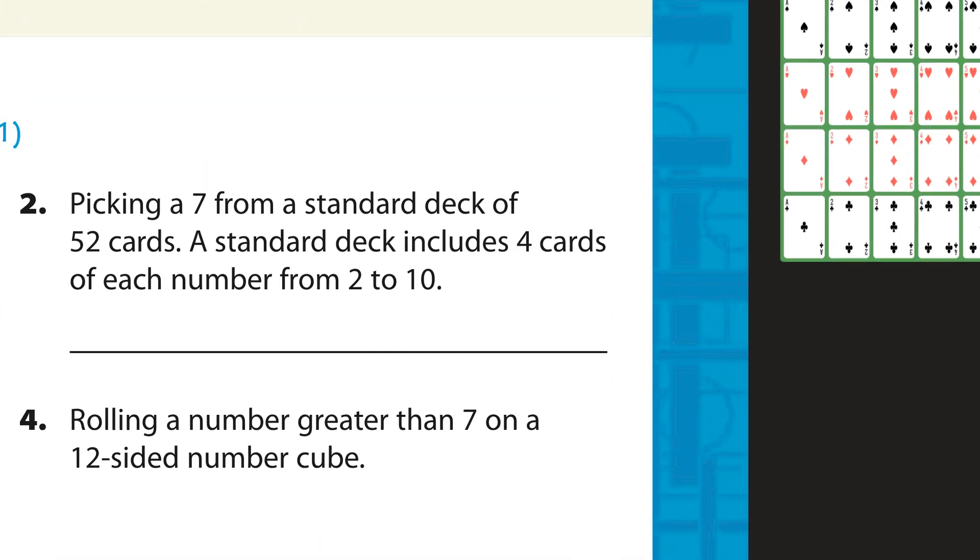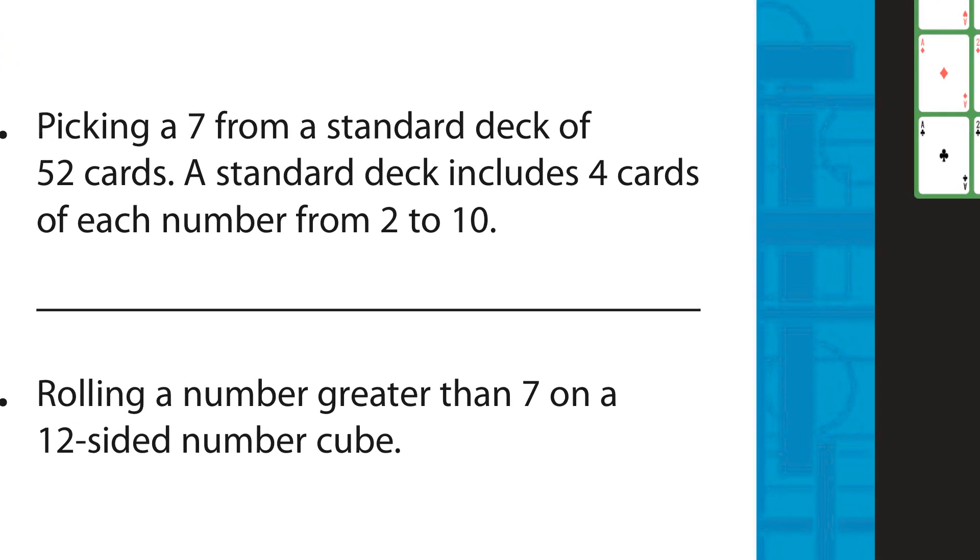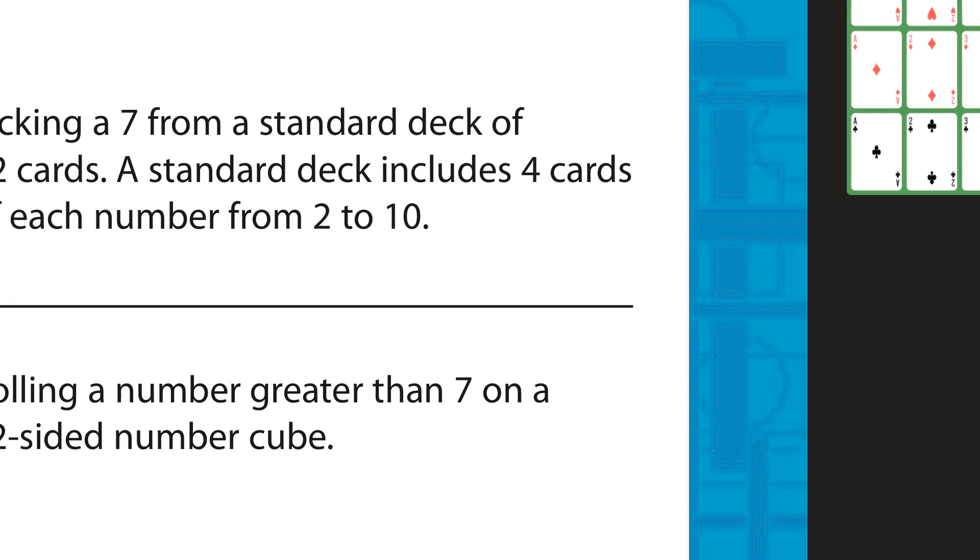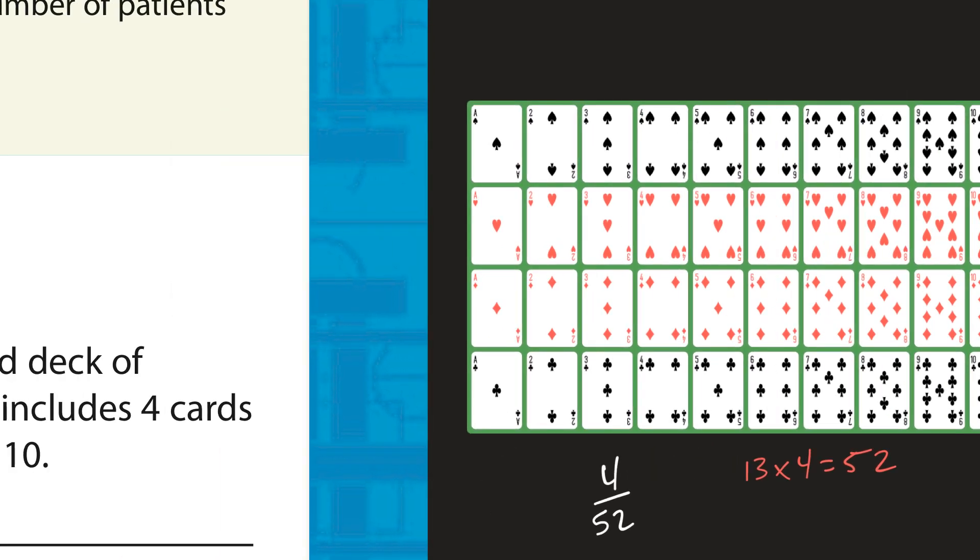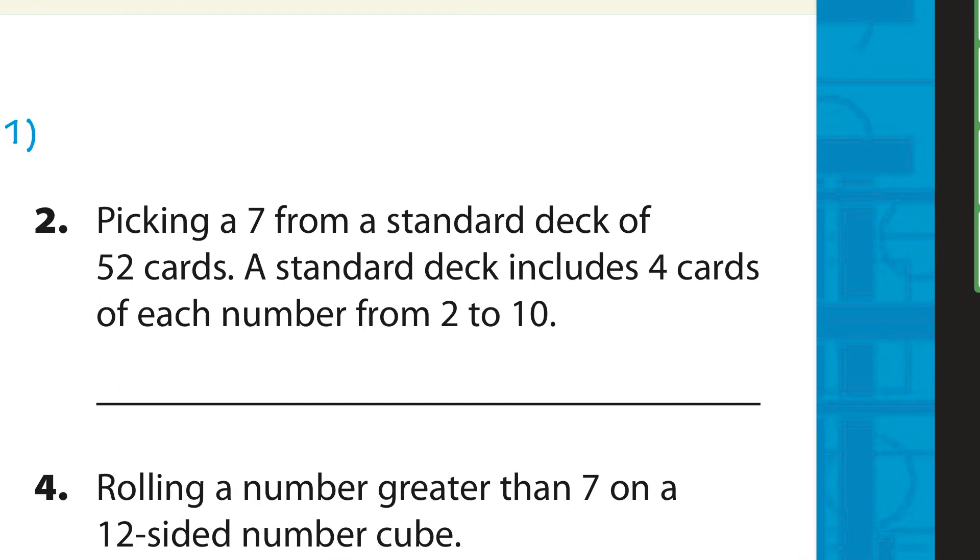So, picking 7 from a standard deck of cards. If we look at this, picking a 7. Well, what we can see here is there are 4 sevens here. So, that would be 4 out of a total of 52 cards. So this would be 4 out of 52.